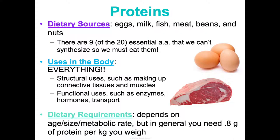The dietary requirement for protein depends on your age, size, and metabolism, but in general most people need about 0.8 grams of protein per kilogram of body weight. Proteins are digested by being broken down into polypeptides, then smaller peptides, then amino acids. Pepsin and pancreatic enzymes play big roles. Digestion occurs mainly in the stomach and small intestine, and amino acids are absorbed alongside sodium and hydrogen via facilitated diffusion into capillary blood, then to the liver and the rest of the body.